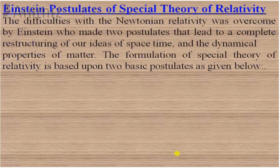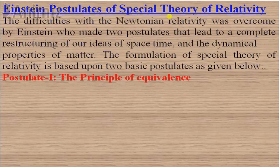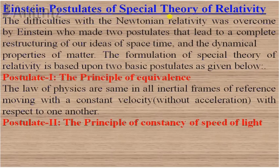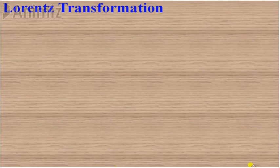Einstein gave two postulates to overcome the difficulties of Newtonian relativity, completely restructuring our ideas about space and time. While we previously thought time is an absolute quantity, according to Einstein, time is a relative quantity — it changes with frame. The first postulate is the principle of equivalence: laws of physics are the same in all inertial frames moving with constant velocity relative to each other. The second is the principle of constancy of speed of light: the speed of light is constant in all inertial frames, with value c equal to 3×10⁸ m/s in free space.